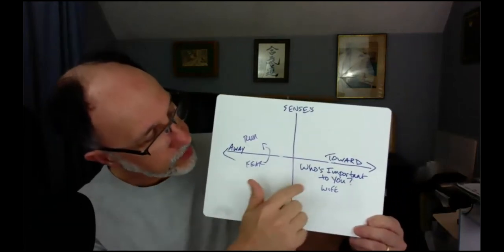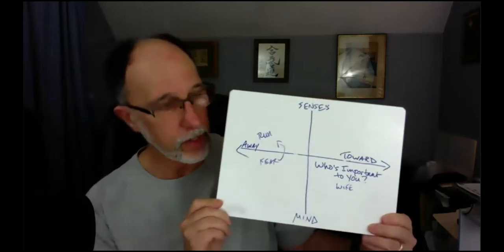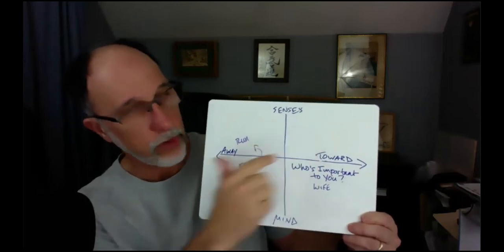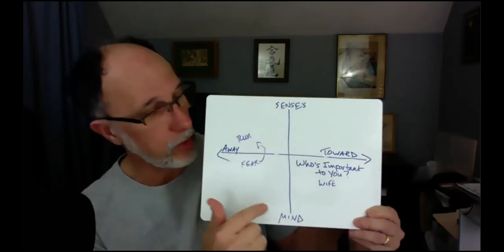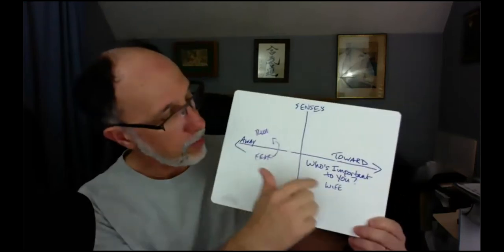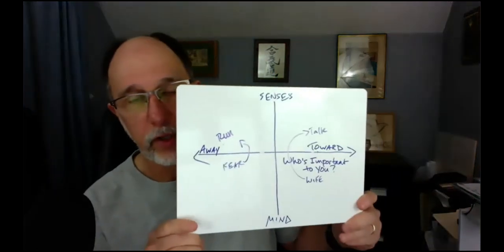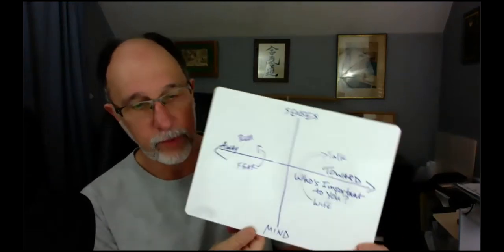Finally, you're going to slide over to the upper right, and you're going to ask them: 'What can you do to move closer to those important people? What kinds of things that you do or can do would bring you closer to those people?' So for my wife, I would maybe write something like, I would go and talk to my wife. And again, I'm modeling it — I'm showing it. So you can have a conversation about that, and before you know it, you're going to have all four quadrants filled up.